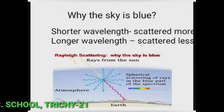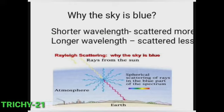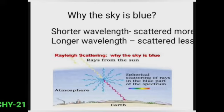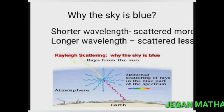According to this law, shorter wavelength colors are scattered much more than longer wavelength colors. Among the seven visible colors, violet and blue have the shorter wavelengths while red has the longer wavelength. When sunlight passes through the atmosphere, the blue color is scattered to a greater extent than the red color. This scattering causes the sky to appear blue.